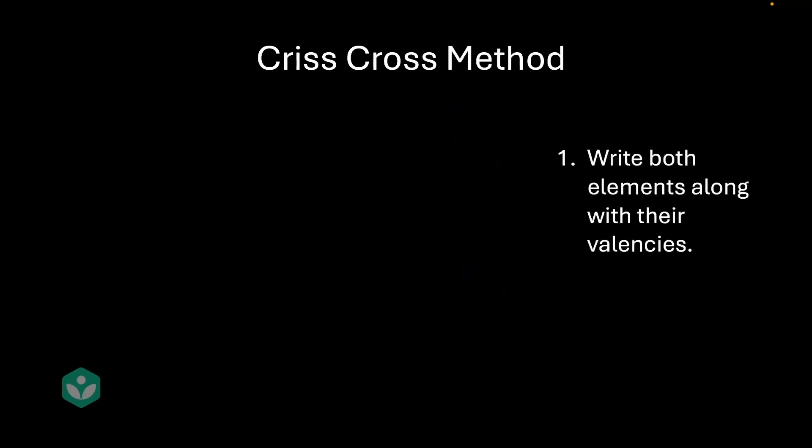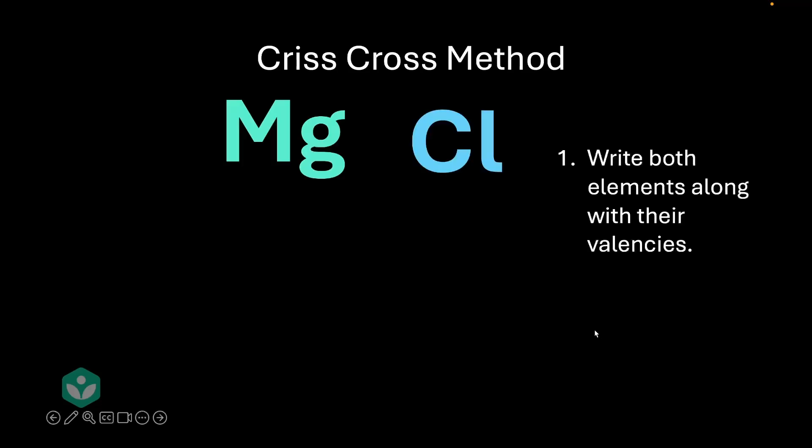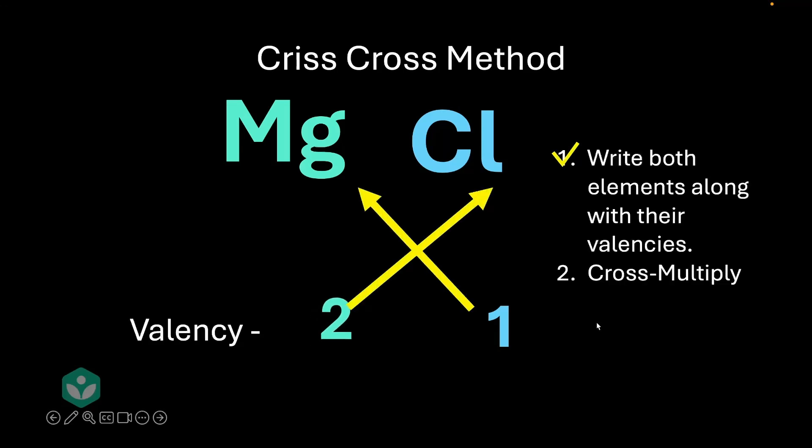Now, let me go ahead and try this same method for a different example. So step one of the method says write down the elements along with their valencies. Let me do that. So I've got magnesium and chlorine this time. Let me write down their valencies. Two and one. Step one is done. Let's move to step two. Step two says cross multiply. Let's go ahead and do that. There you go. And let's move the one as well. Amazing. Step two done.